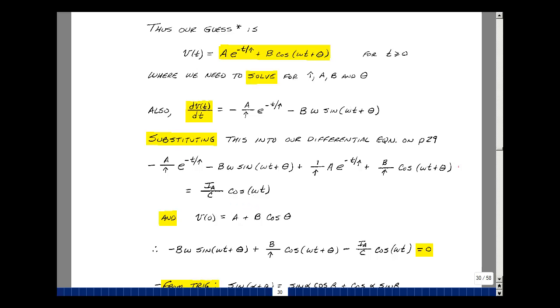We also have an initial condition. We know the value of the capacitor voltage at T equals 0 minus, and therefore it equals 0 plus, just like we did in our previous work. If you go back to this equation and plug in T equals 0, you get A and you get B times the cosine of theta. So here's one equation in my three unknowns. I need two more equations.